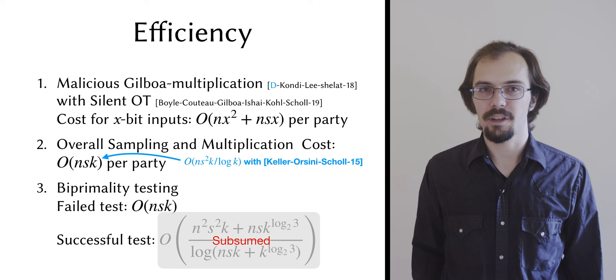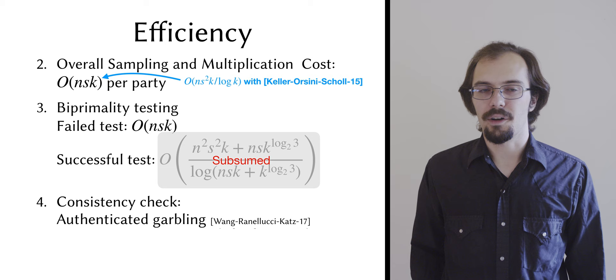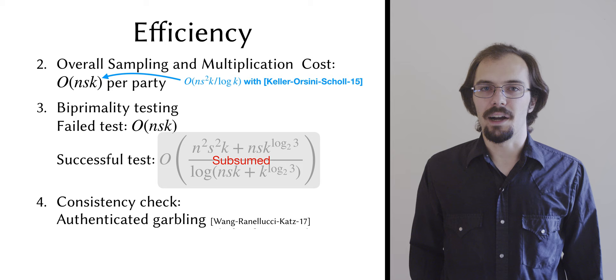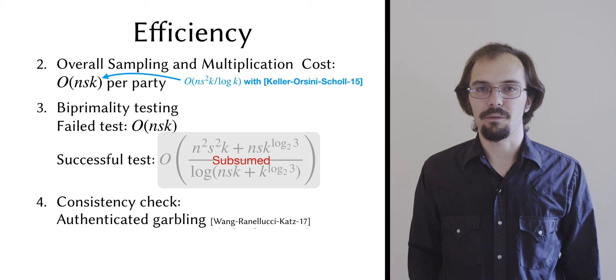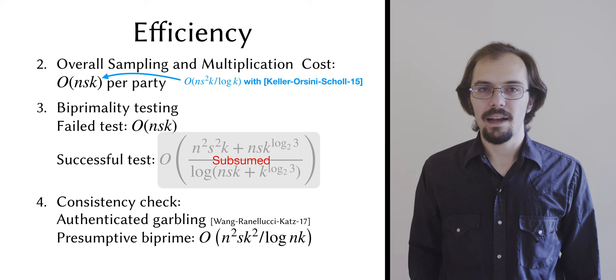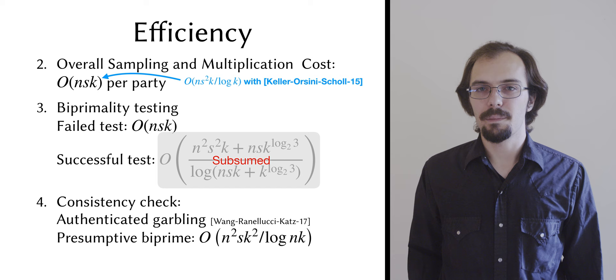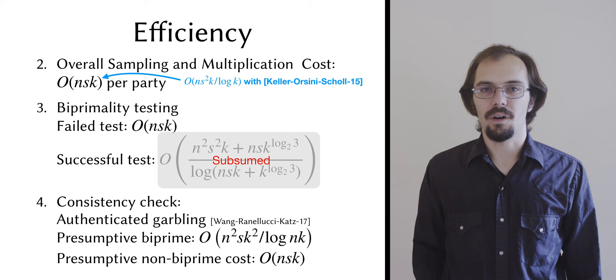Our consistency check also has different costs depending on whether or not n is thought to be a biprime. If n is thought to be a biprime, then we use a generic MPC to evaluate the predicate securely. If we instantiate this with the authenticated garbling protocol of Wang, Ronalducci, and Katz, then it has communication complexity in O of n squared sk squared over log of nk. If n is thought not to be a biprime, then we reveal everything and evaluate the predicate locally, and the reveal operation costs O of nsk overall.